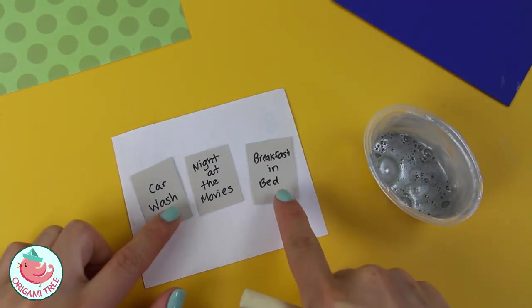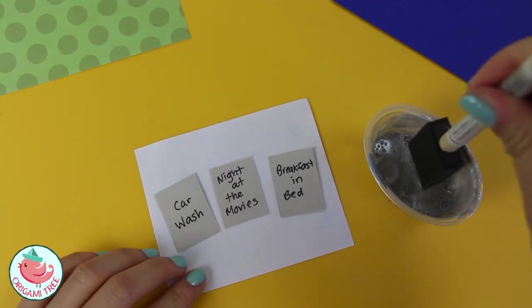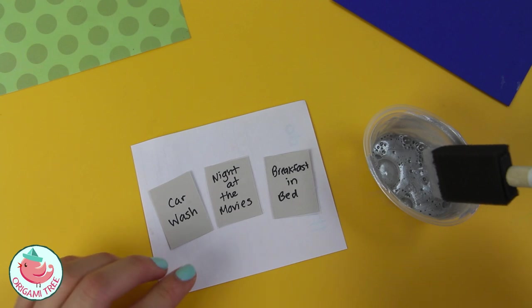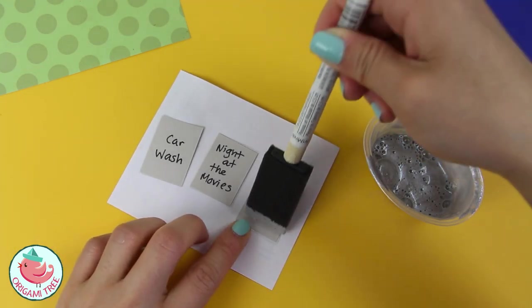Next I just place my little messages on a scrap paper so I don't damage my table surface. And then I'm going to use the solution and paint a thin layer over it. And you may need to paint a couple layers before you can cover the entire message.